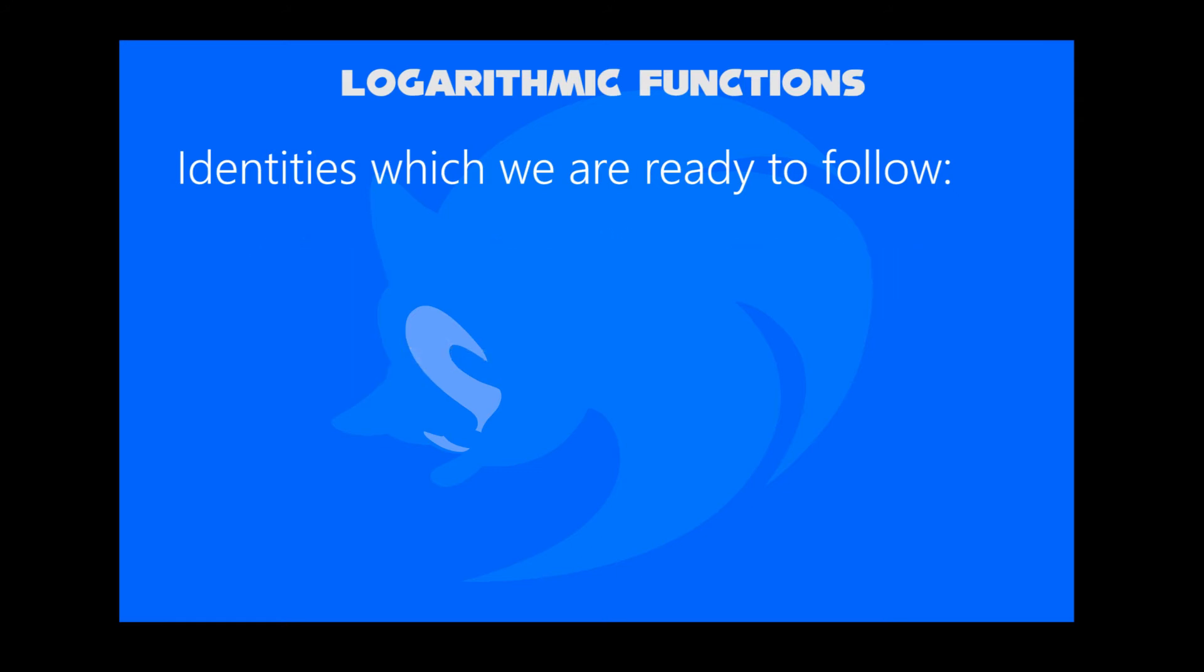And finally sixth identity, we make some variations of log values. We know log of 1 is 0, and log 0 is undefined in the negative y axis.